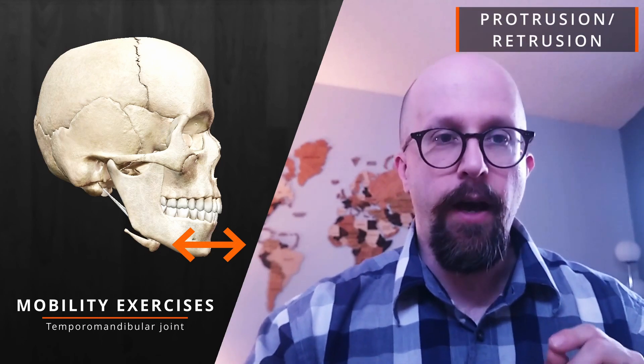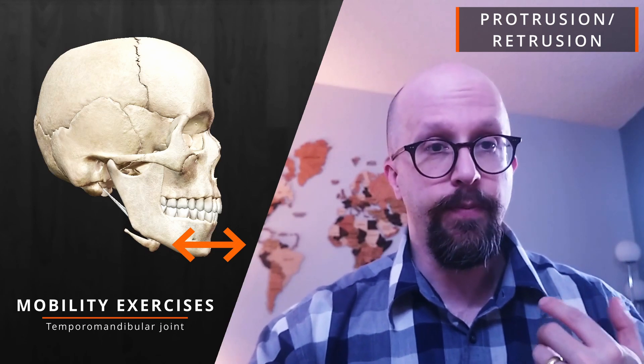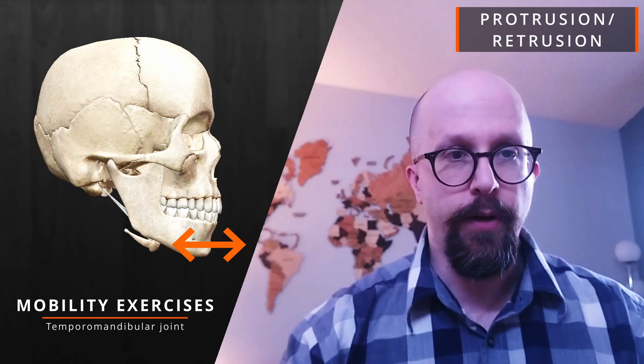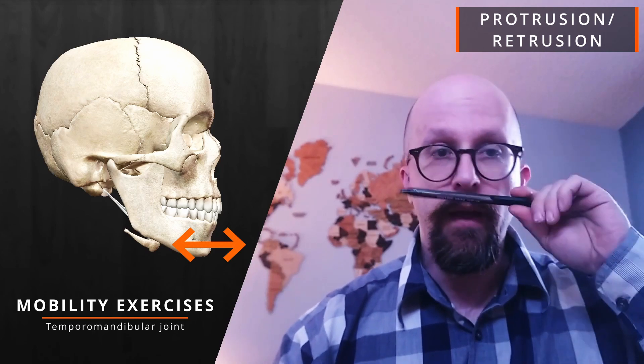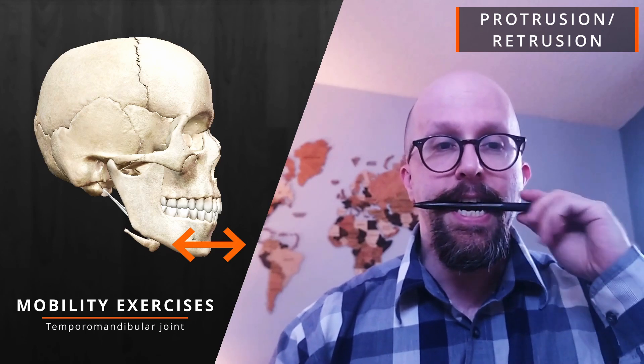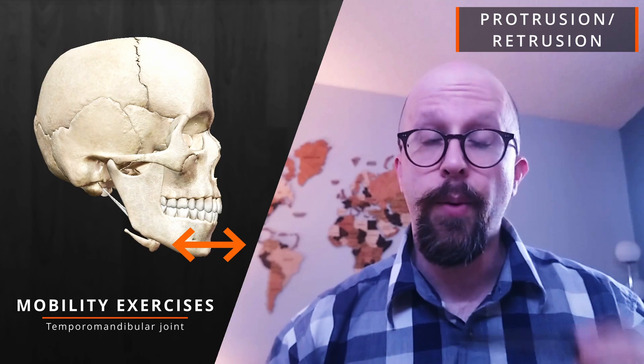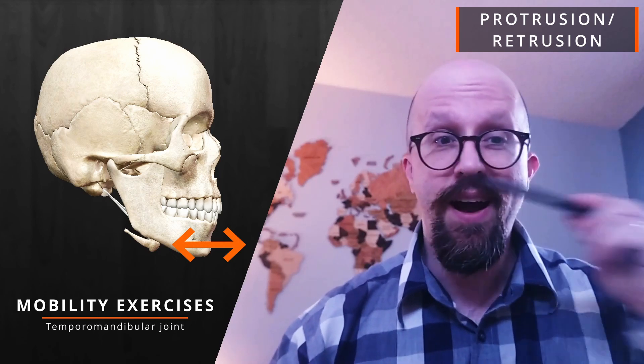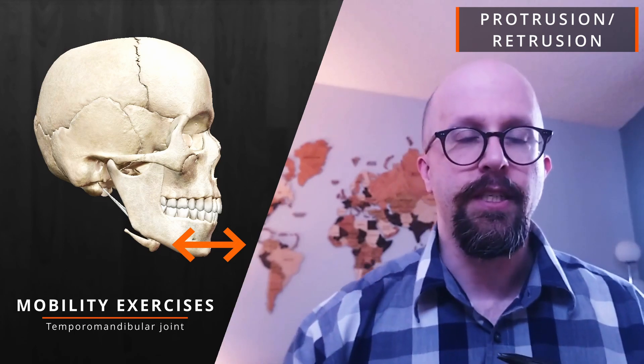The next movement that we have is protrusion and retrusion. That's going to teach the translation of the jaw. To do that, you need a pen. You're going to place the pen between your teeth. Remember when I told you to say the word Emma and where your mouth ended? When you say Emma, you'll be able to put the pen right in there. It's going to be fairly similar.